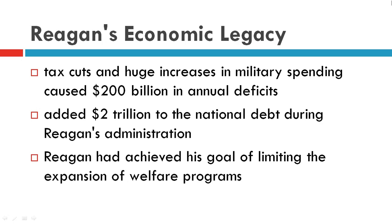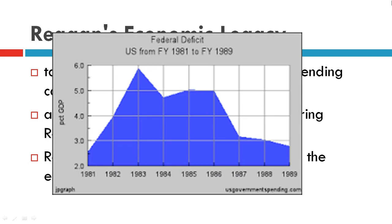Therefore, he did achieve his goal of limiting the expansion of welfare programs. But by the early 1990s, median household income had declined. The federal deficit as a percent of GDP increased quite a bit throughout the Reagan administration.